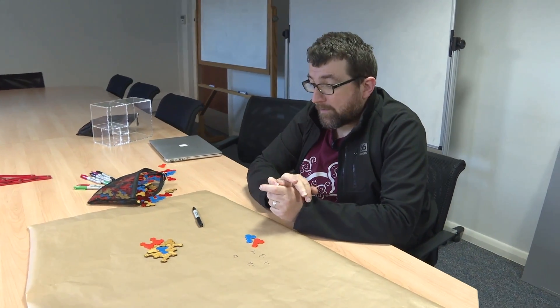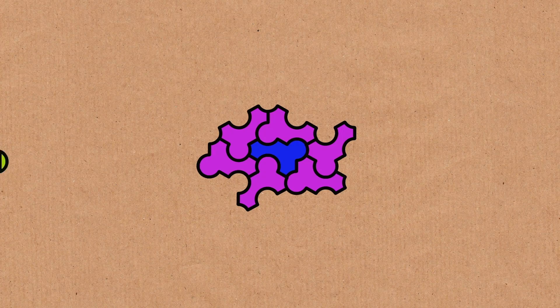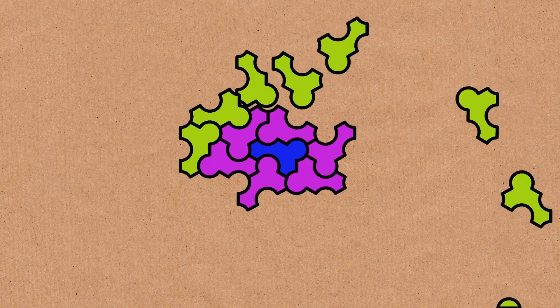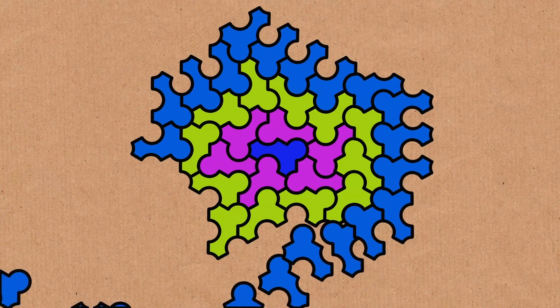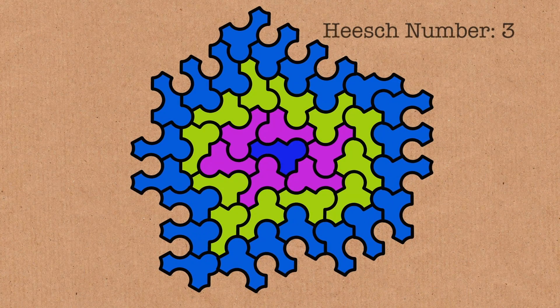This is a tile we're going to have to stop at some point, and the number of rings we can do is something called the Heesch number. So what's the Heesch number for that shape? The Heesch number for this shape is three, and here is something where we can show those rings. And so no matter how hard you try, you can't go further than that with this particular tile.